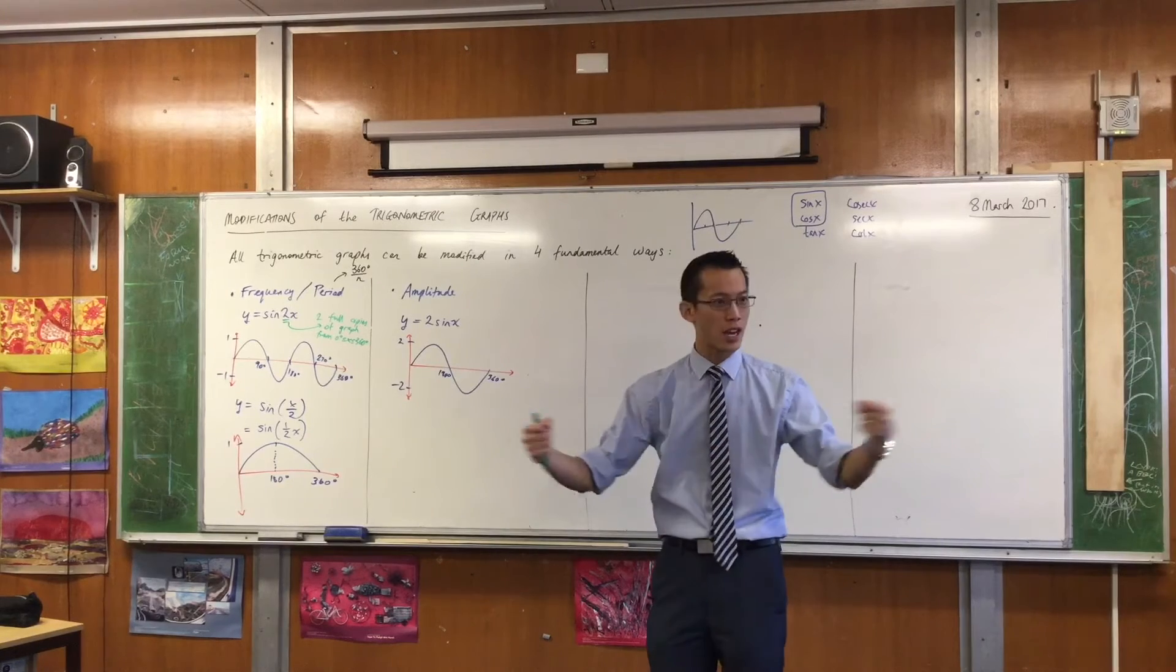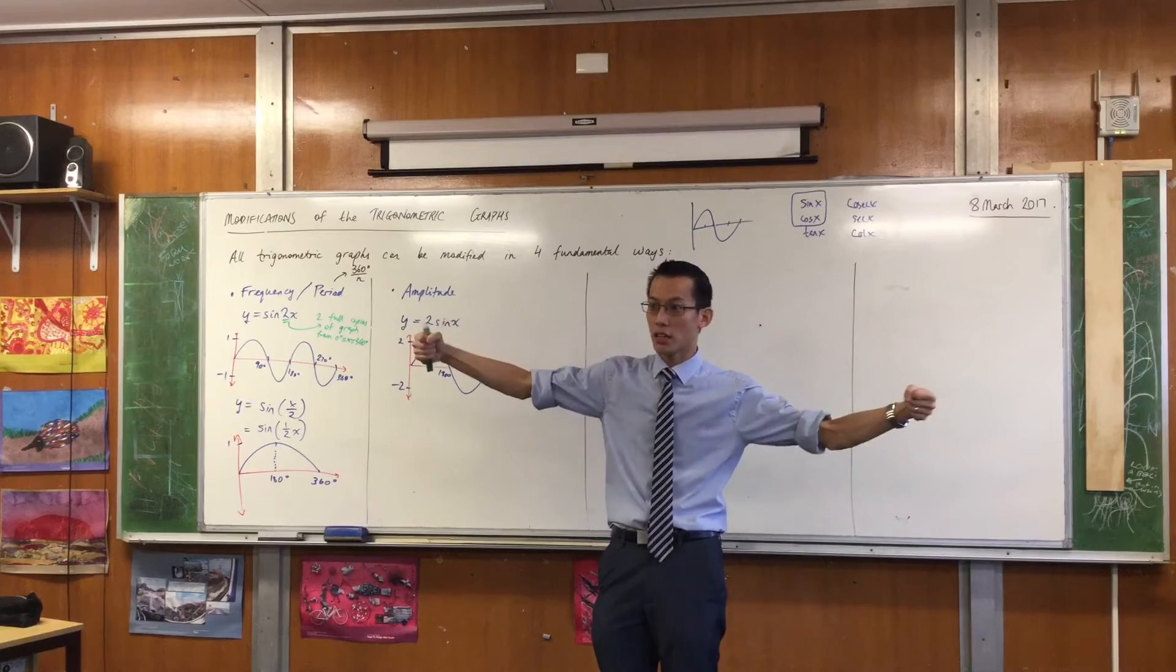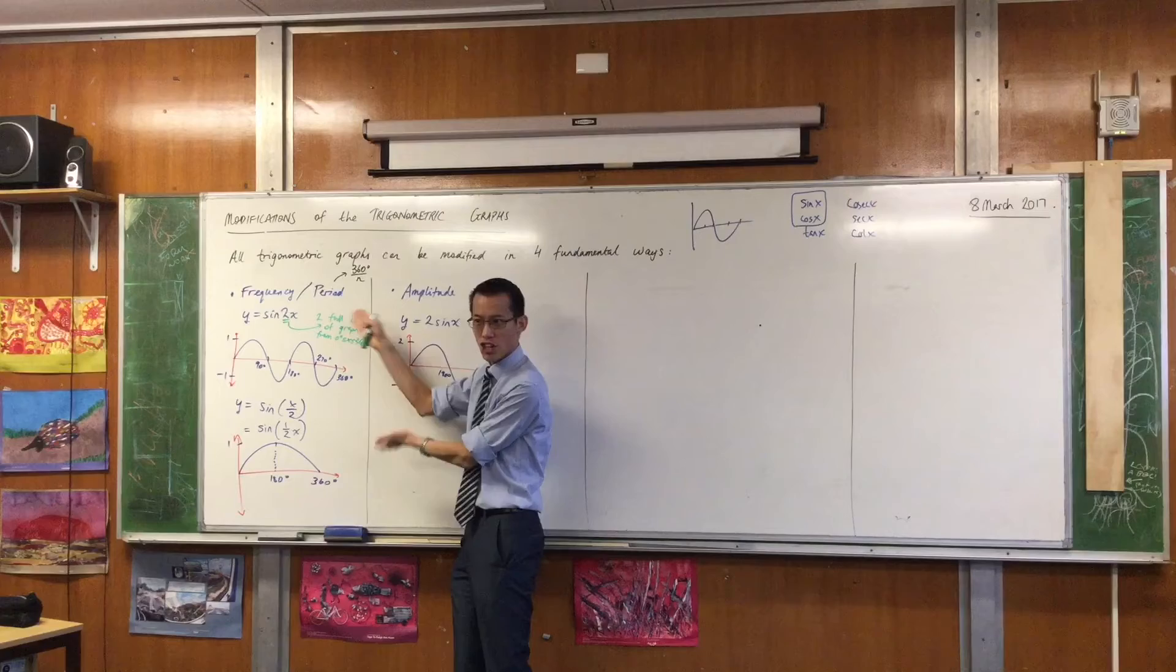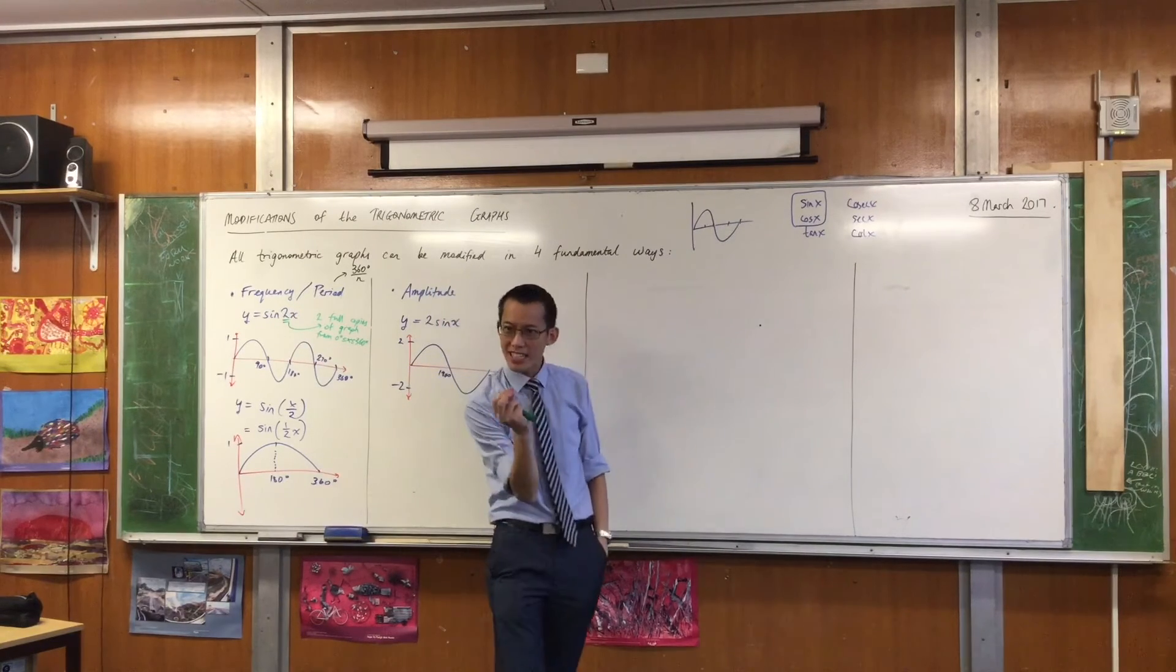So I want you to imagine the sine curve a bit like an accordion. You can stretch it out or you can squeeze it in, and that makes sense because look at where the numbers are that we're changing over here. Look at where the 2 is and where the half is. What is it attached to?